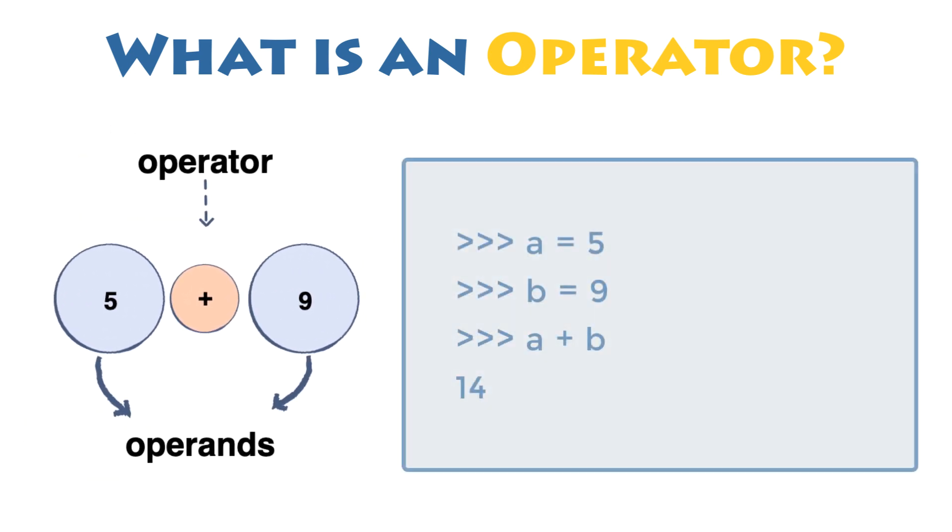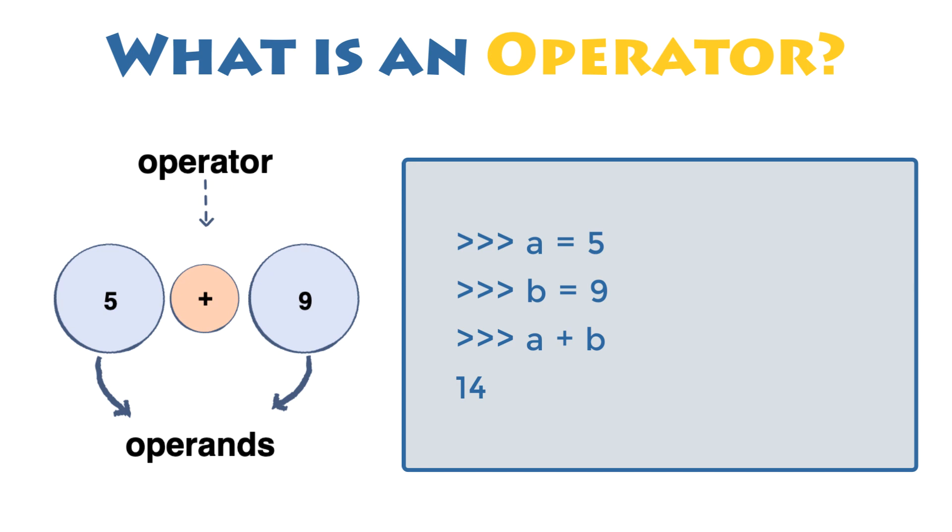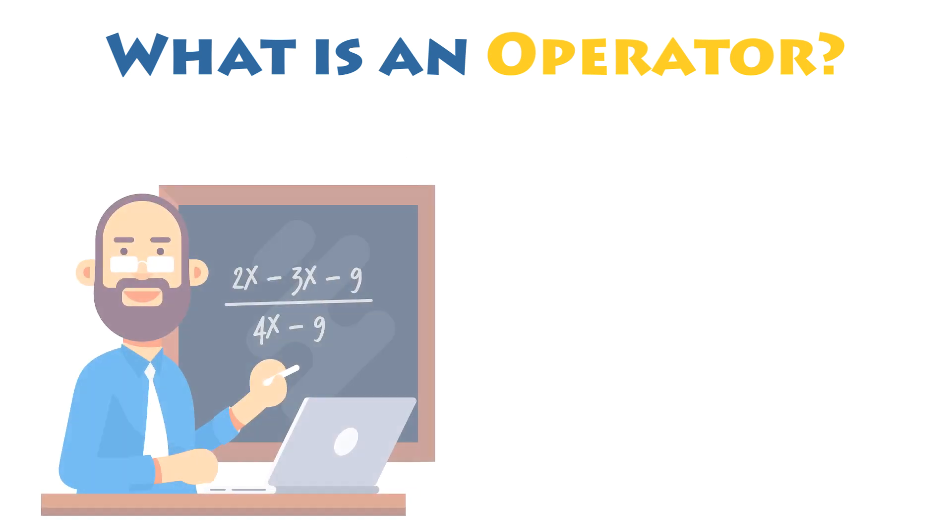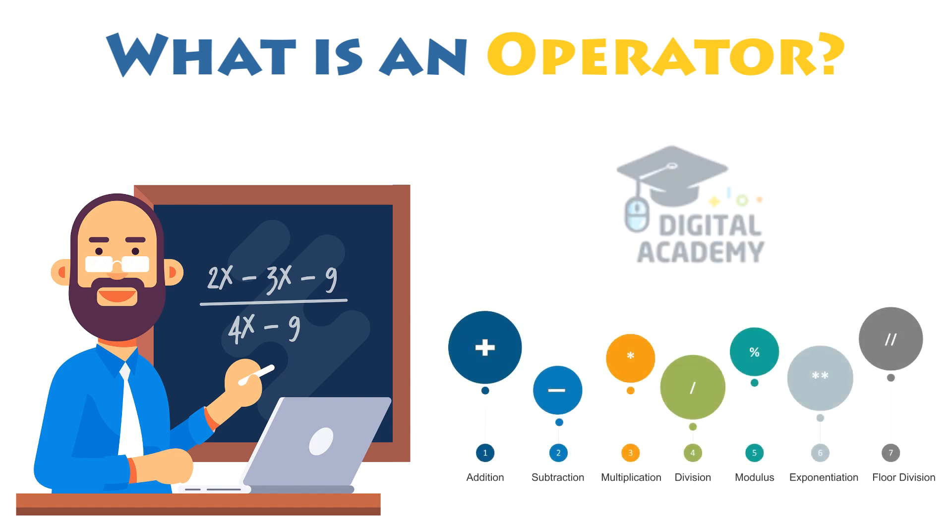Here is an example. In this case, the plus operator adds the operands a and b together. An operand can be either a literal value or a variable that references an object. A sequence of operands and operators like a plus b is called an expression. Python supports many operators for combining data objects into expressions. These operators are explored in the next section.